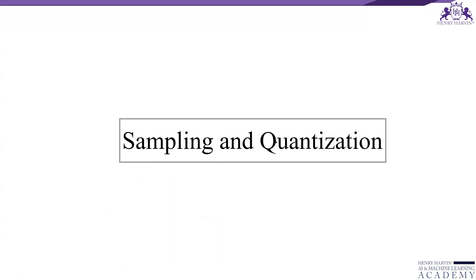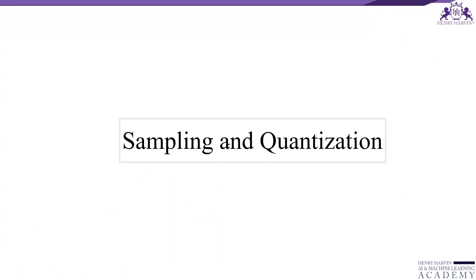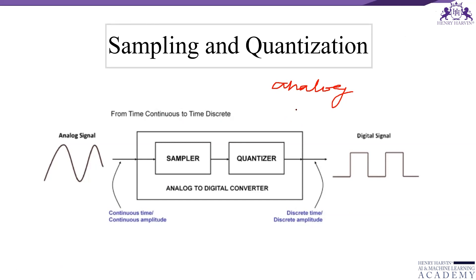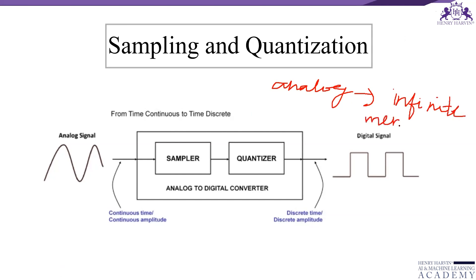Hello everyone. In this video let us discuss about the need of sampling and quantization in digital image processing. Most of the time the output of image sensors is in the form of analog signals. The problem is that we cannot apply digital image processing techniques on analog signals, and we cannot store analog signals because it requires infinite memory. So we try to convert this analog signal into a digital signal.